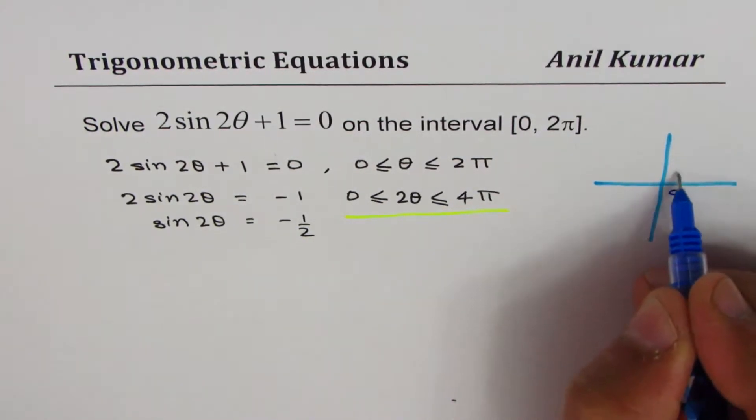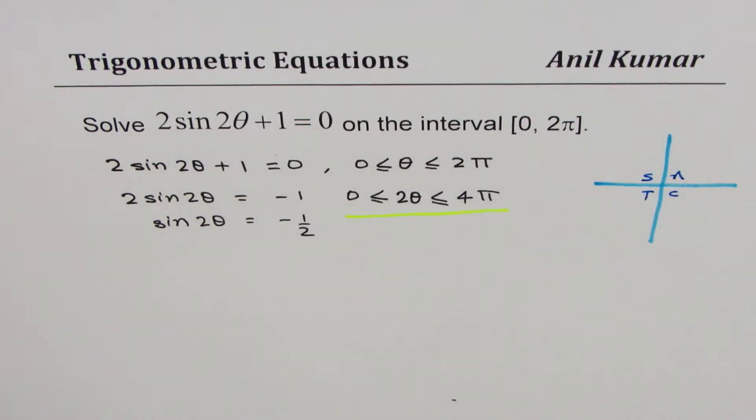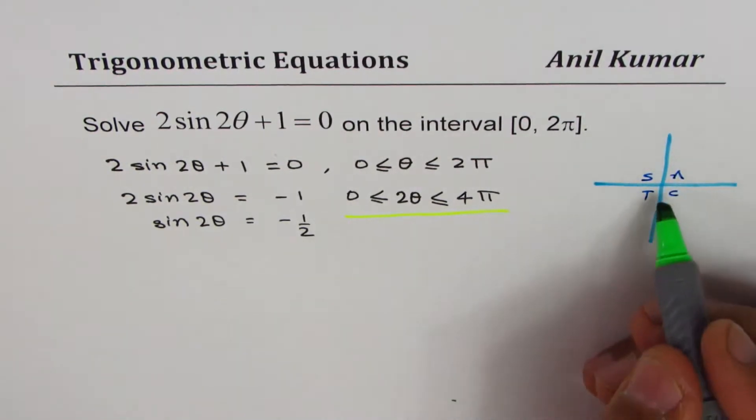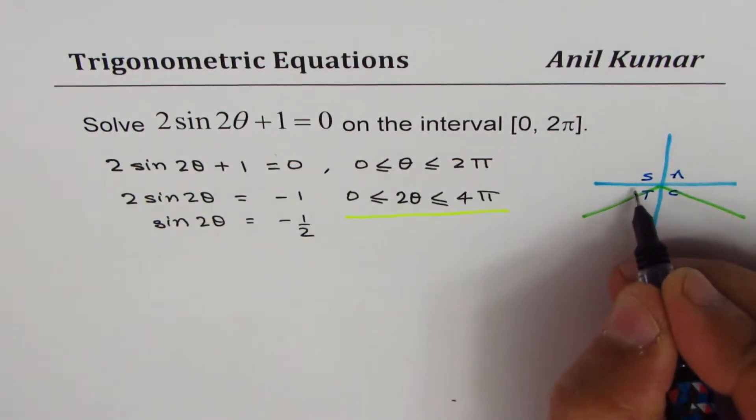Let's consider the coordinate plane. Negative sine means, if you know the CAST rule, sine is negative means we are looking for two solutions: one is in quadrant 3, the other one is in quadrant 4.